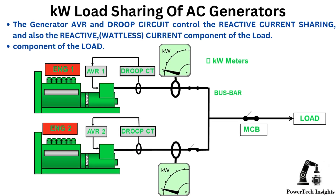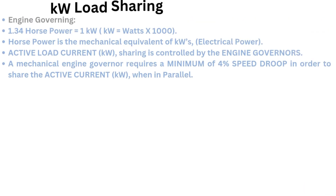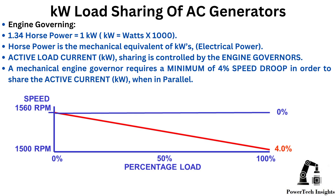KW load sharing of AC generators. The generator AVR and droop circuit control the reactive current sharing and the reactive (wattless) current component of the load. The diesel engines must have similar no-load to full-load governor characteristics to share the active current (power factor 1), or kW component of the system. Engine governing: 1.34 horsepower equals 1 kilowatt; horsepower is the mechanical equivalent of kW electrical power. Active load current (kW) sharing is controlled by the engine governors. A mechanical engine governor requires a minimum of 4% speed droop in order to share the active current (kW) when in parallel.